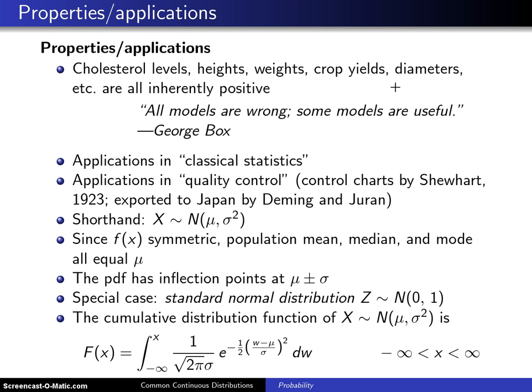This brings up a quotation from George Box, one of the pioneers in statistics and professor for many years at the University of Wisconsin. He said 'all models are wrong.' The probability model using the normal distribution for any of these applications is not exactly right because the support isn't exactly right. However, some of these models are close enough to being right to be useful.